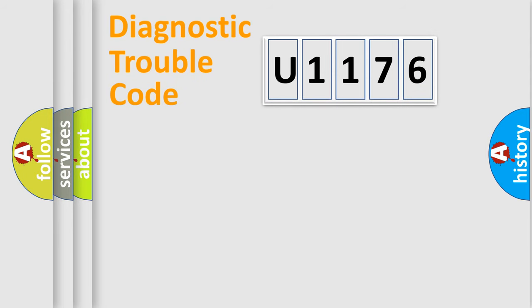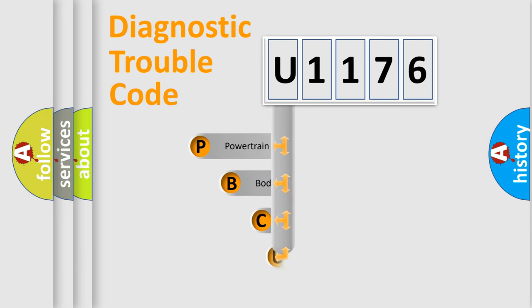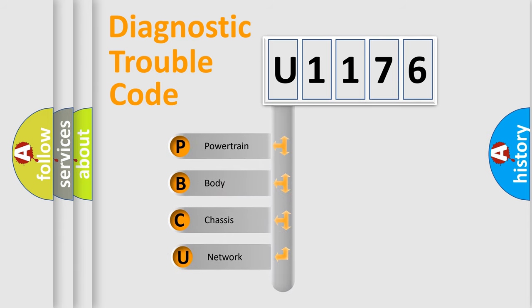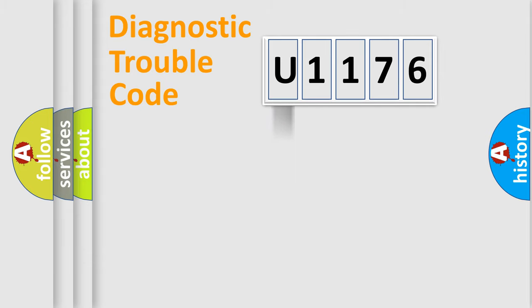Let's look at the history of diagnostic fault code composition according to the OBD-II protocol, which is unified for all automakers since 2000. We divide the electric system of an automobile into four basic units: Powertrain, body, chassis, and network.